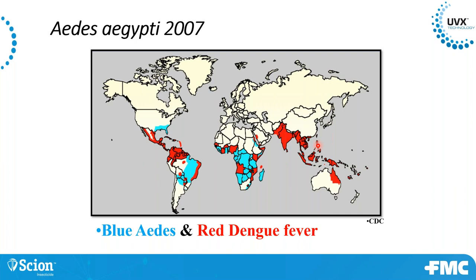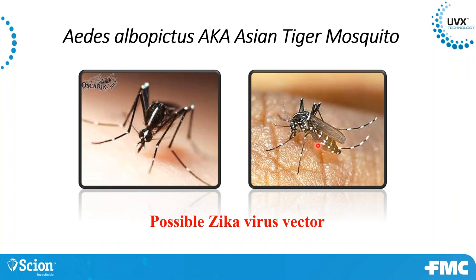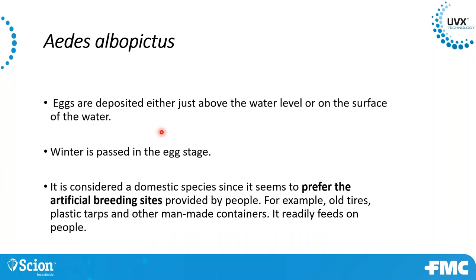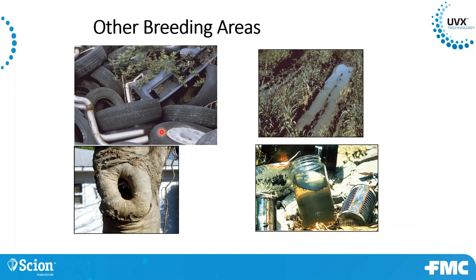Aedes albopictus — the Asian tiger mosquito — just has a white stripe rather than the violin marking of aegypti. It deposits eggs just above the water level, overwinters in the egg stage, and prefers artificial breeding sites like tires and tarps. Also look for depressions near the structure that could hold water after rain — tire ruts, for example — and have those filled in or leveled off. This one is also a persistent, painful daytime biter.